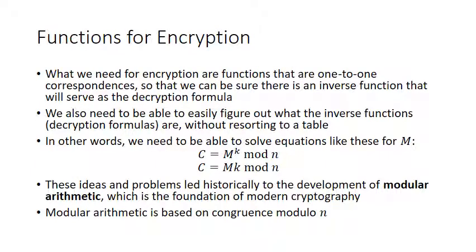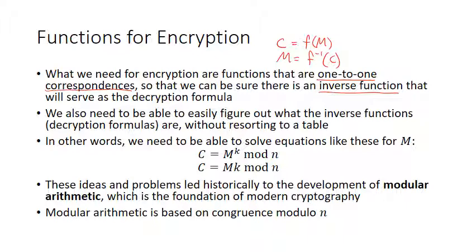What we actually need for encryption is functions that are one-to-one correspondences — meaning the function is one-to-one and onto. We need this type of function because we need an inverse function that will serve as a decryption formula. If you have some way of encrypting using a function, you plug M into the function and get your ciphertext, then you need the inverse function applied to C to get your message back. Only functions that are one-to-one correspondences will be invertible.